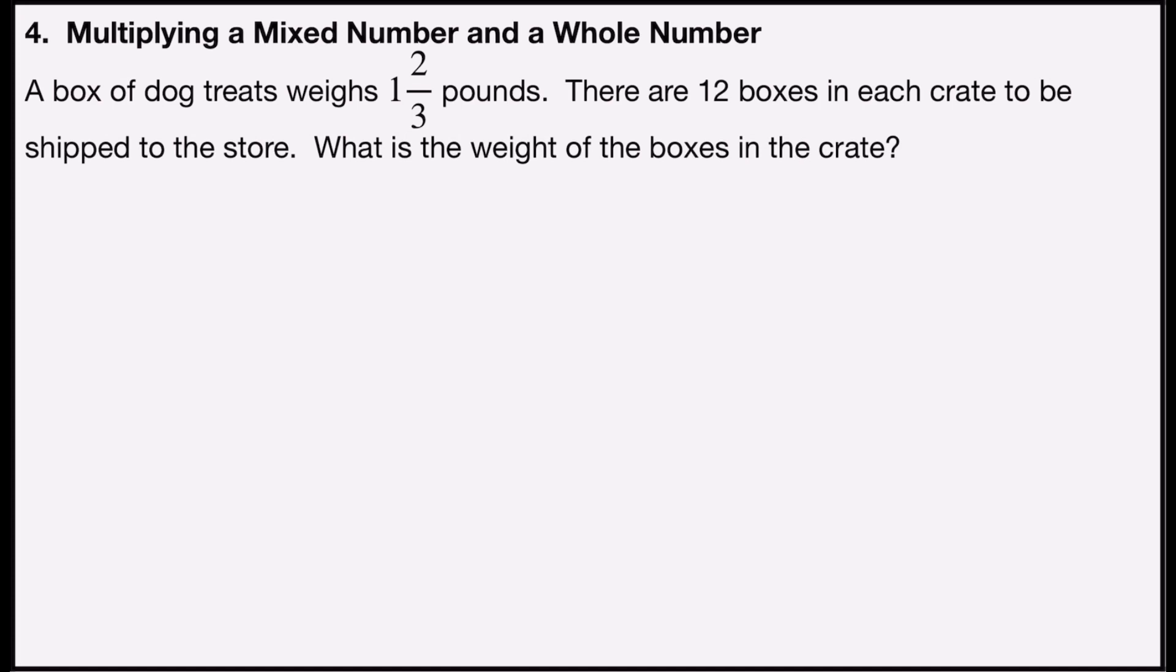And each of those is weighing 1 and 2/3 pounds, so I need 1 and 2/3 pounds 12 times. That's what I'm going to do: multiply 1 and 2/3 times 12. To do that, I'm going to write both of those as fractions.